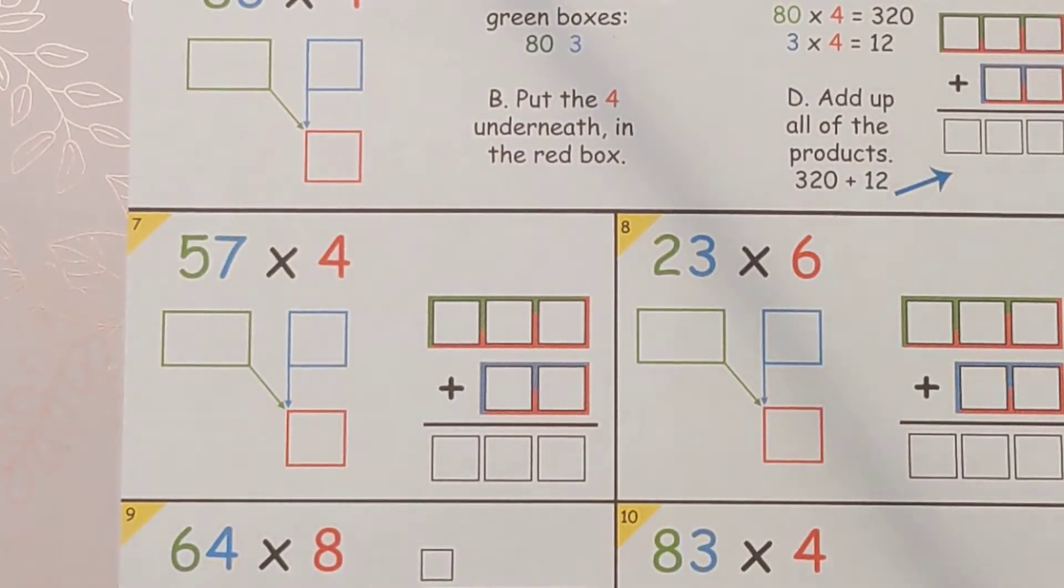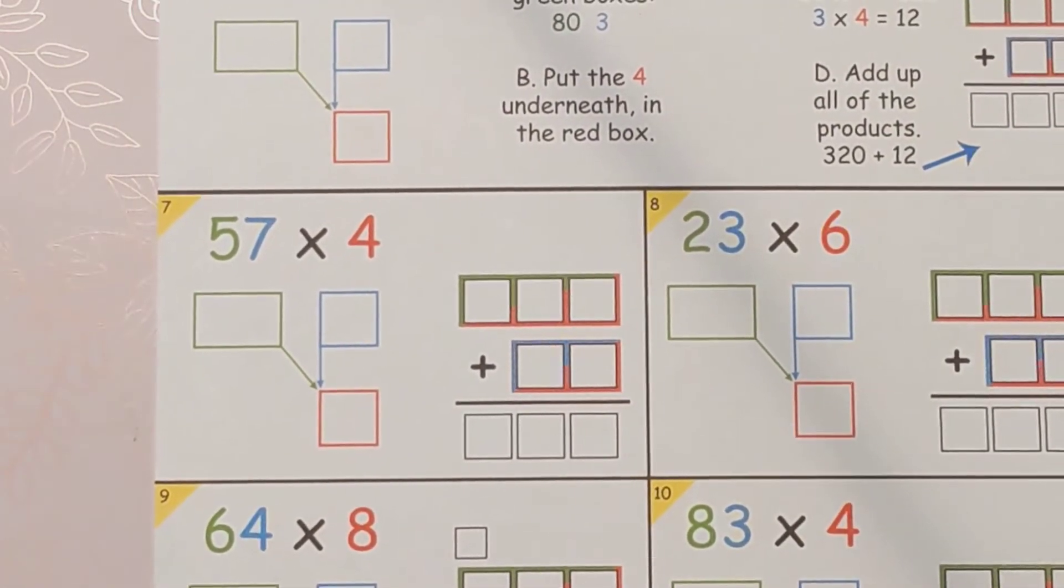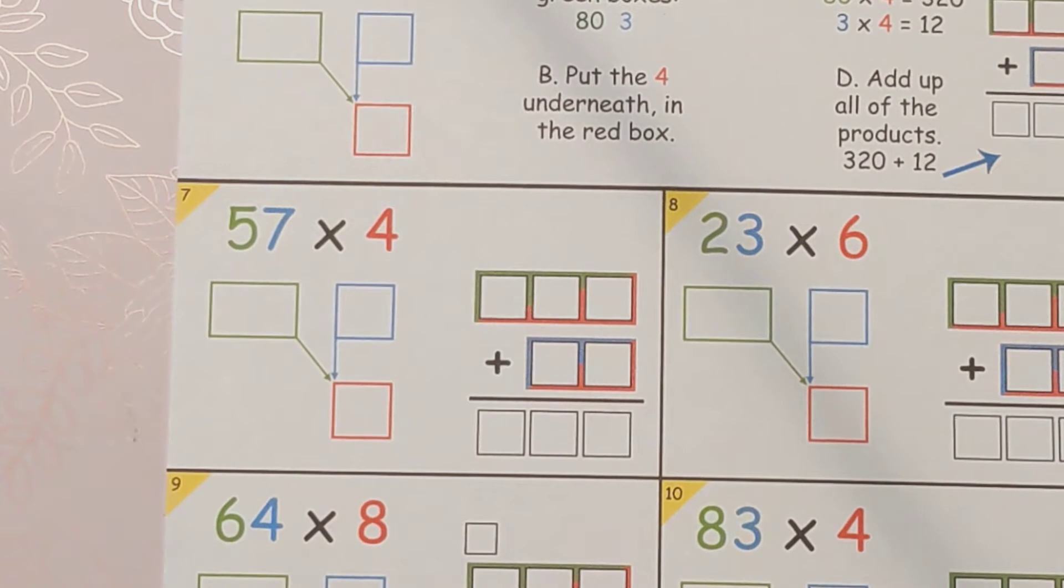So when we say partial products, all that means is that we're taking the numbers and splitting them into easier numbers before we multiply.